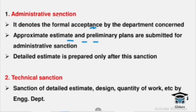Formal acceptance by a particular Administrative Department is called Administrative Sanctions. We prepare an Approximate Estimate for Administrative Sanctions. For Technical Sanctions, we prepare a Detailed Estimate. We have already prepared the Approximate Estimate, but now we prepare a Detailed Estimate, which covers the Design and Quantity of Work, submitted to the PWD Department for Technical Sanctions.